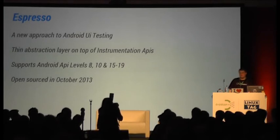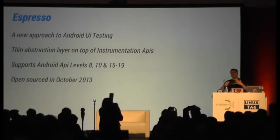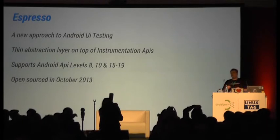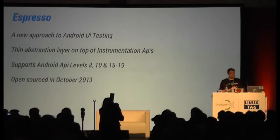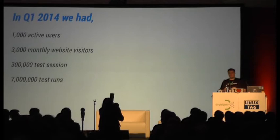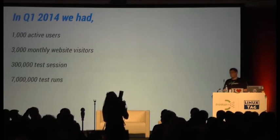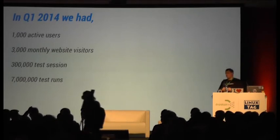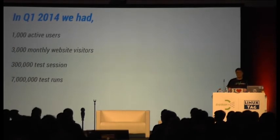It's a thin abstraction layer on top of the instrumentation APIs, and we launched it as a preview publicly in October on code.google.com. Since then, we've seen tremendous growth — a lot of people are already using it. We have 1,000 active users, 3,000 GitHub watchers, 300 test sessions, and almost 7 million test runs.